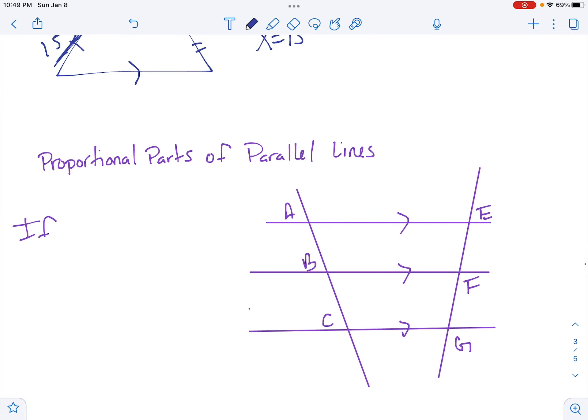Now, what if we have parallel lines? When we have parallel lines, proportional parts of parallel lines. So now, we don't really have a triangle, but we do have three parallel lines. So if AE is parallel to BF, and BF is parallel to CG, then we can say that this middle parallel line right here is going to make two equal proportions. So it's going to cut this side into one proportion, which means we have AB over BC. And then it's going to cut this side into the other proportion. So it would equal EF over FG.